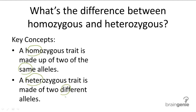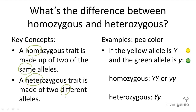Let's use pea color as an example. If big Y is the yellow allele and little y is the green allele, a homozygous pea will have big Y big Y or little y little y as its genotype. A heterozygous pea will have big Y little y, and by the law of dominance, it will be yellow. So yellow peas can either be big Y big Y or big Y little y.